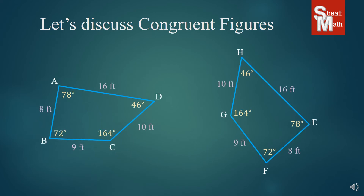Now let's take a look at this one. When you're looking at two figures and you're trying to figure out if they're the same, I usually start with the sides. So 8, 16, 10, and 9 — and we've got an 8, a 16, a 10, and a 9 on the right side. Then I look at the degrees: 78, 72, 164, 46, 72 — and we have a match as well. So these appear to be congruent. But I want you to notice one thing, and this kind of confuses students.